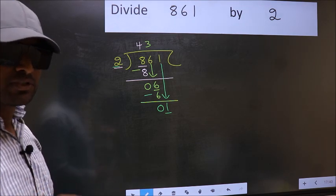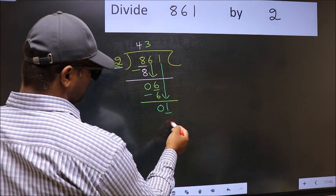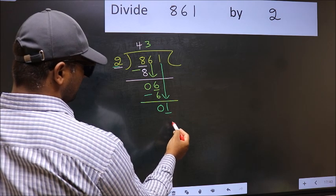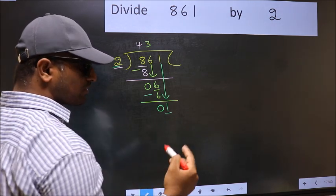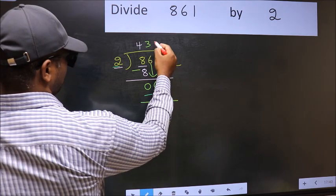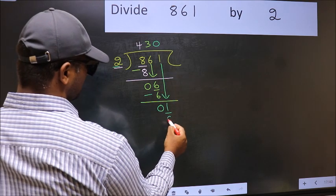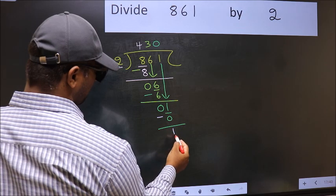Instead, what you should think of is, what number should we write here? If we take 1, we get 2 here. But 2 is larger than 1. So what we do is, we should take 0. So 2 into 0, 0. Now you subtract. 1 minus 0, 1.